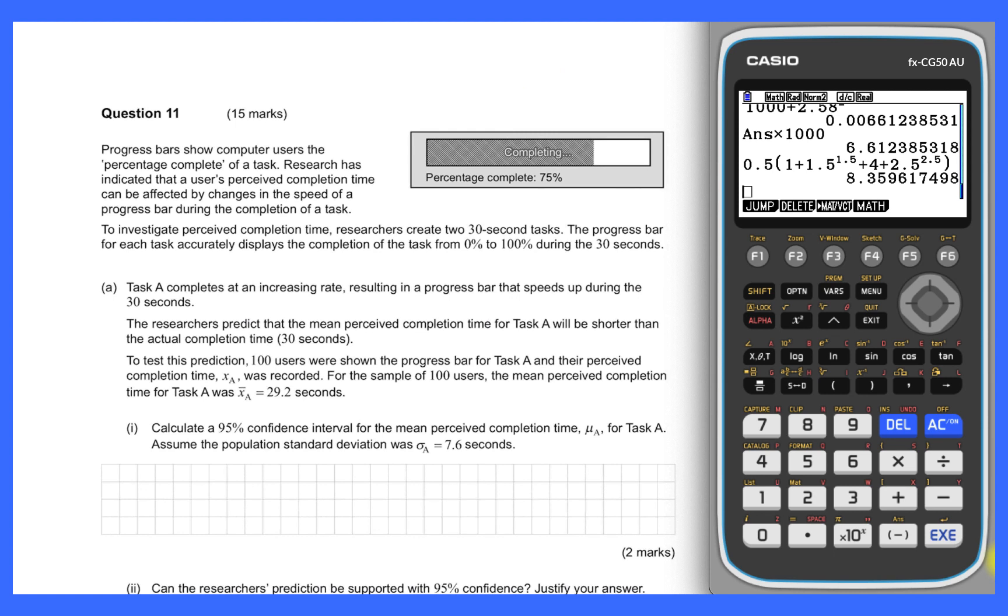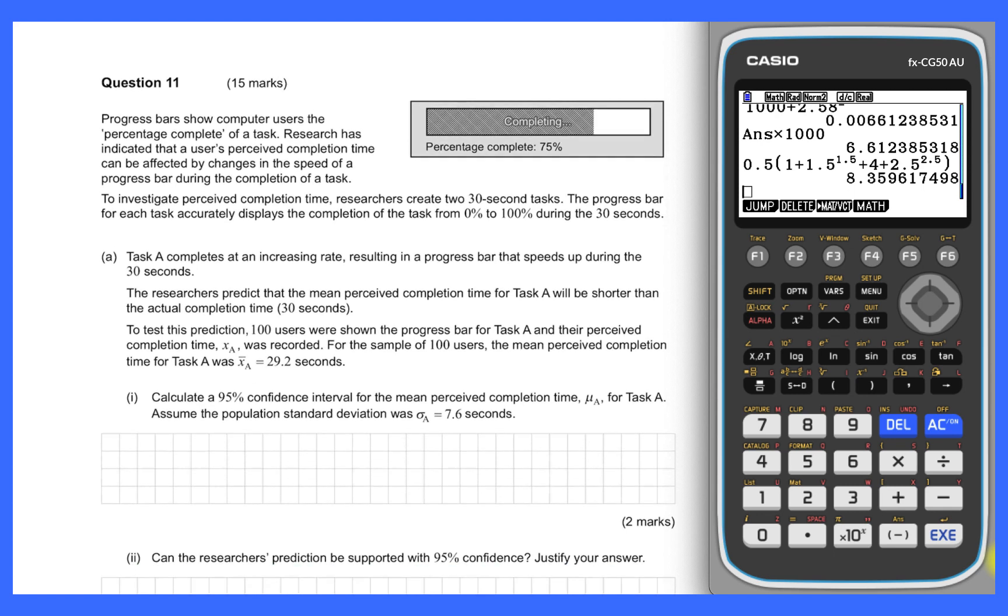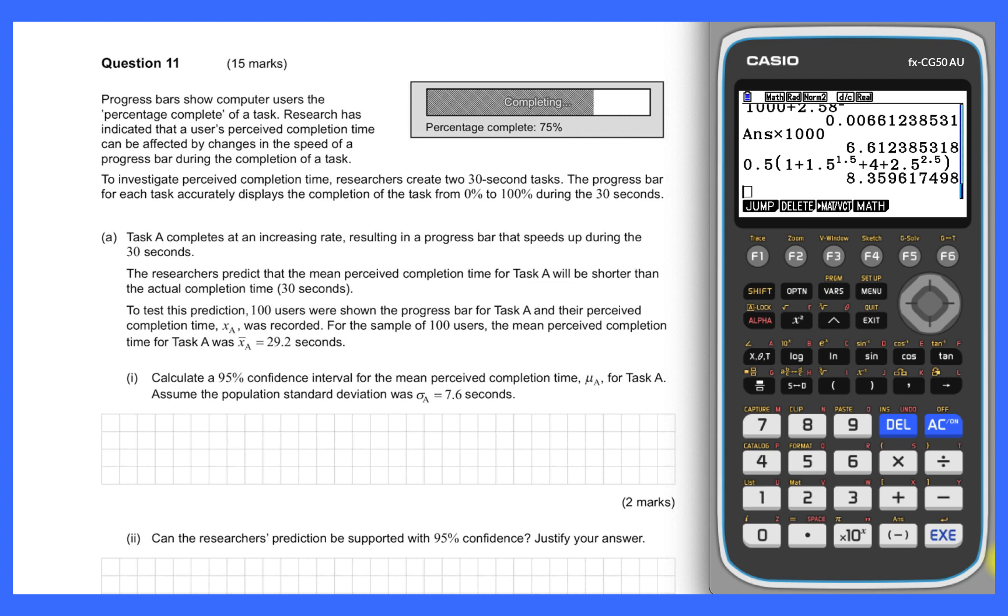Okay, question 11, which is the last question of the exam. So this is an exciting moment, we're entering the home stretch. This question looks like it's focusing on the progress bars on a computer, something I'm sure that most of us are familiar with. We're getting a lot of information there that we're going to have to digest. This is about the idea of a perceived completion time and it seems to be affected by the changes in the speed of a progress bar, whether it goes quickly then slowly or slowly then quickly and those sorts of things. So the data this question is drawing on looks like it's talking about two different 30-second tasks.